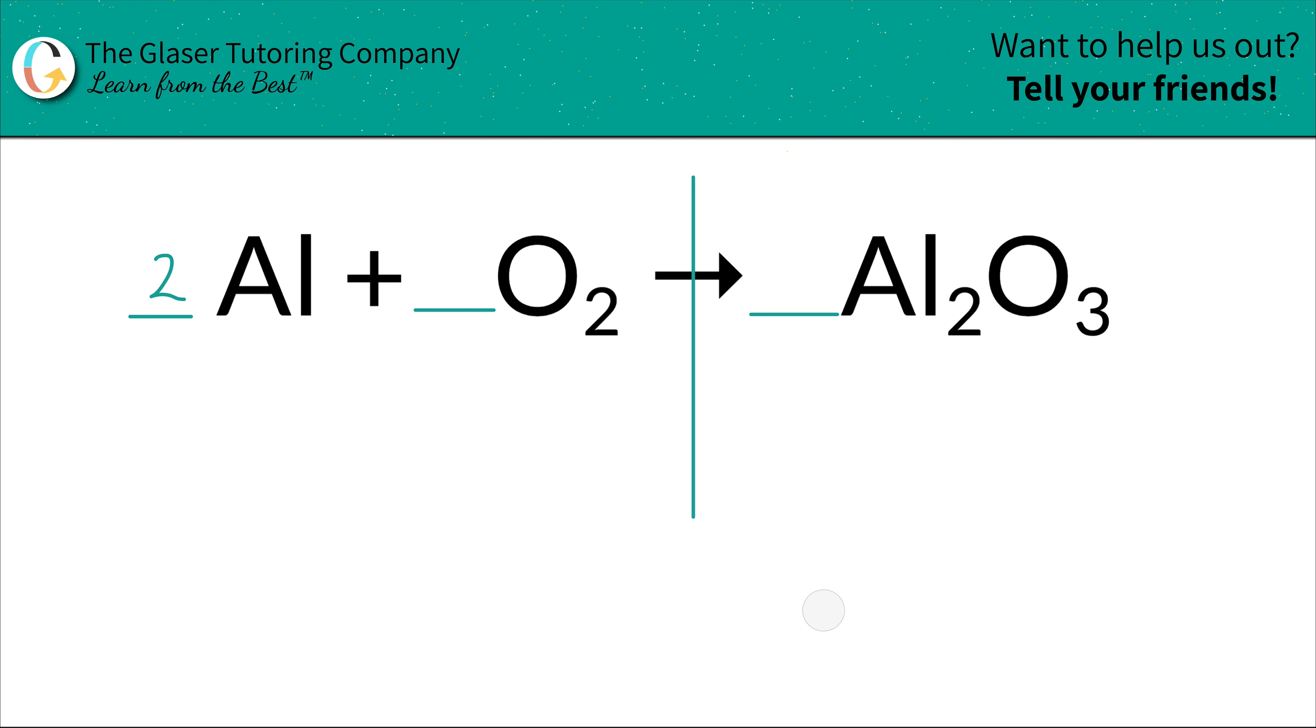Then what we're going to do is balance the oxygen. So you have two oxygens on the left, so write that down, and then you have three oxygens on the right.